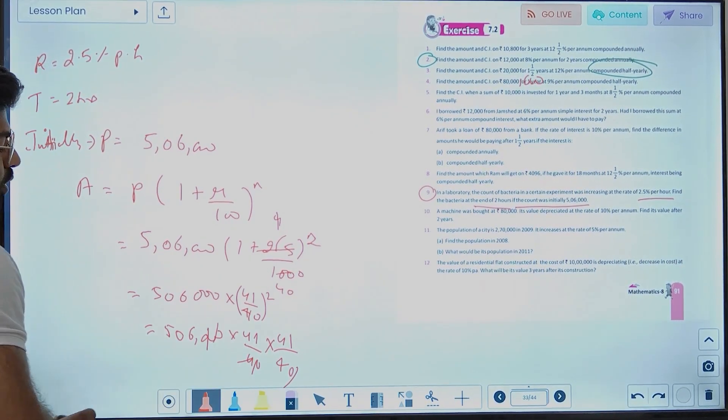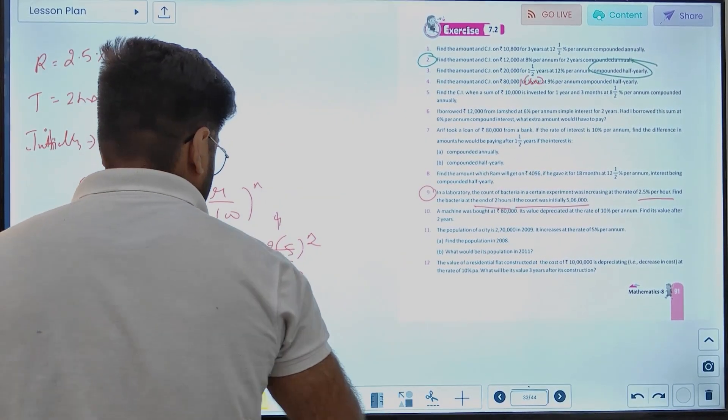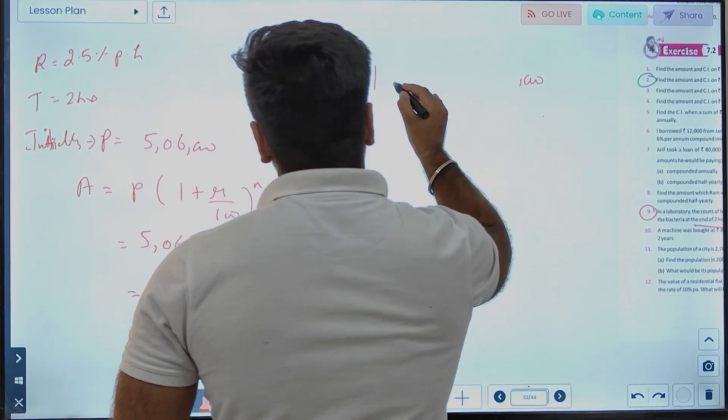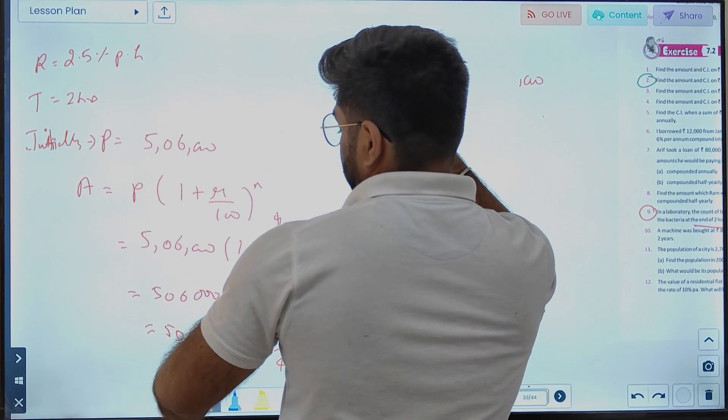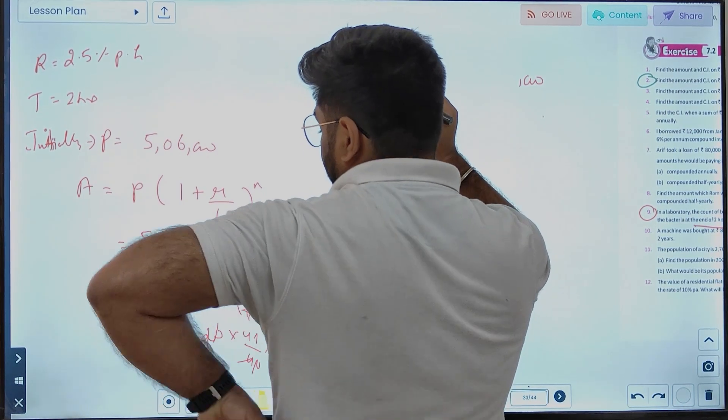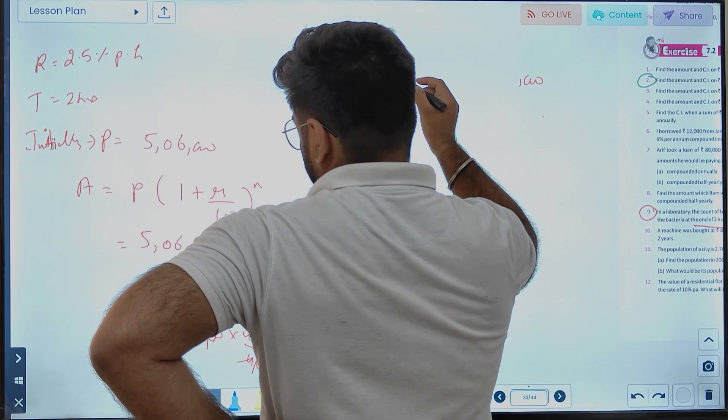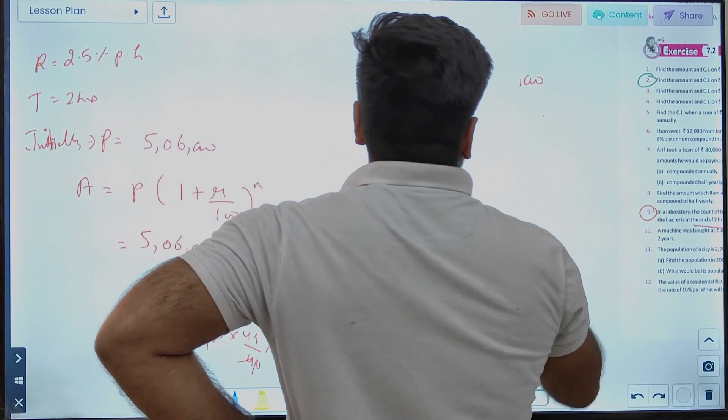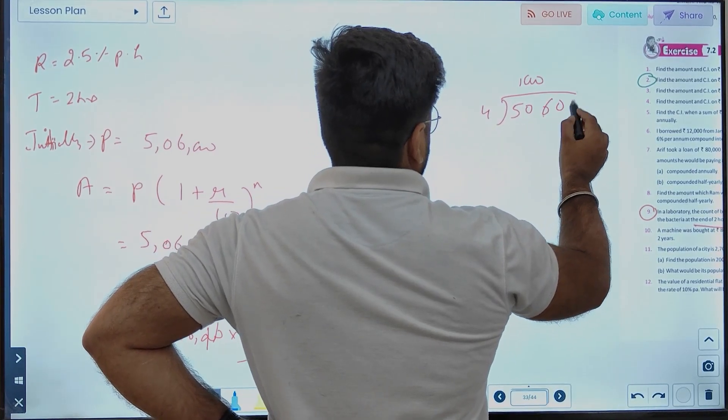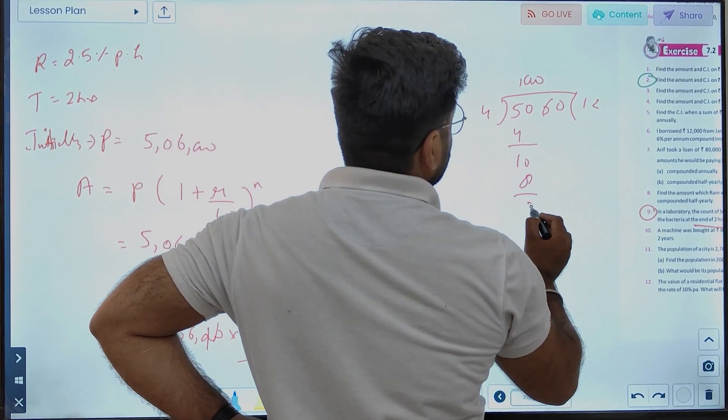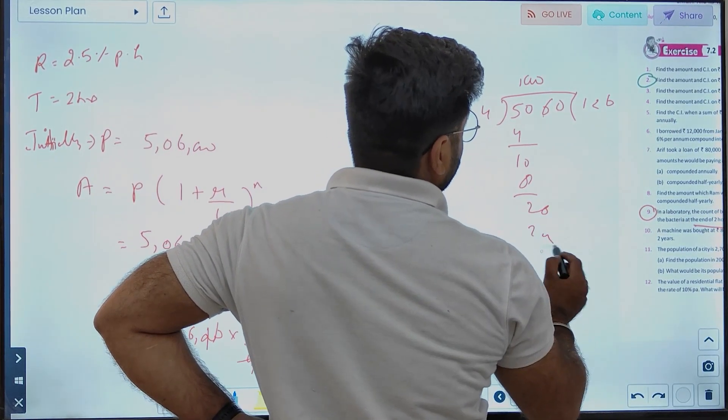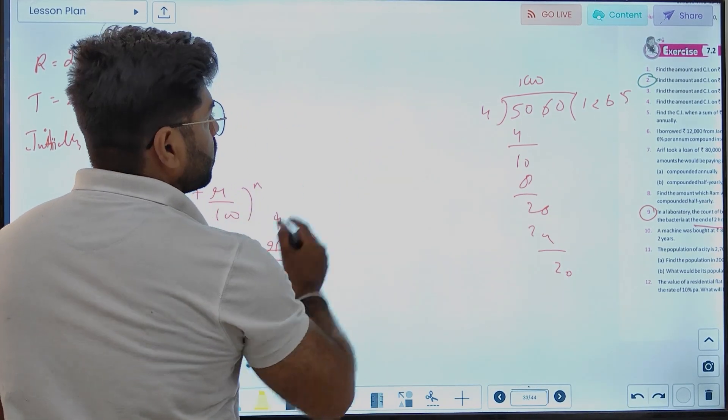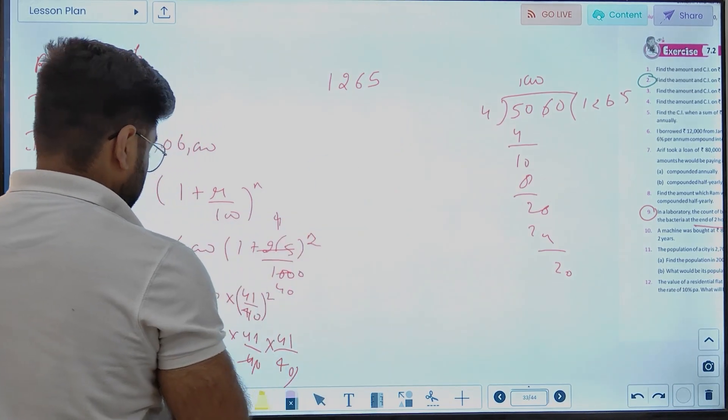Working through: 41 times 41 equals 1,681. Dividing step by step: 253 times 41 divided by 40. First multiply 253 by 41, then divide by 40. After calculations, we get the bacteria count after 2 hours.